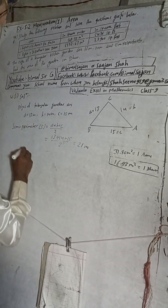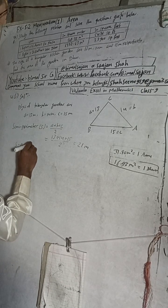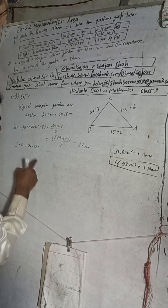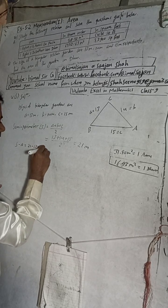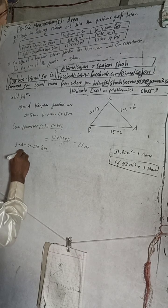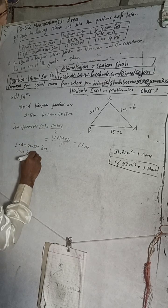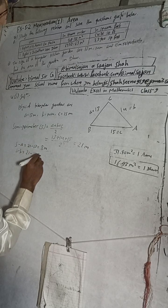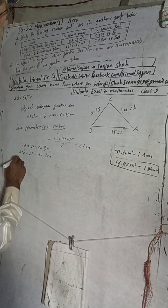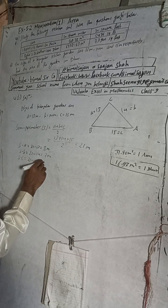And now, s minus a — that means 21 minus a — this will be 7 meters. Then s minus b: 21 minus b gives 7 meters. And s minus c: 21 minus c gives 6 meters.